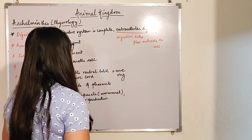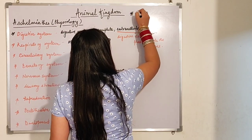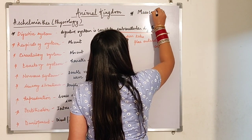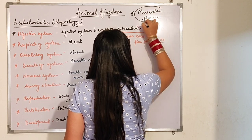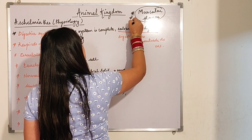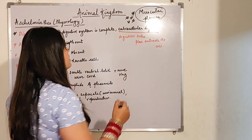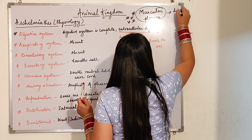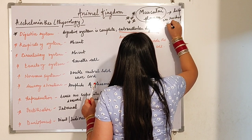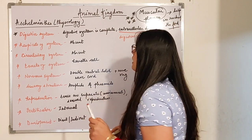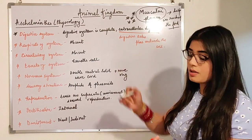A very very important feature of this phylum is that it has a muscular pharynx. Muscular pharynx is a characteristic feature of Aschelminthes. What is this muscular pharynx doing? It is helping in sucking the food — it is mainly responsible for sucking the food in Aschelminthes.